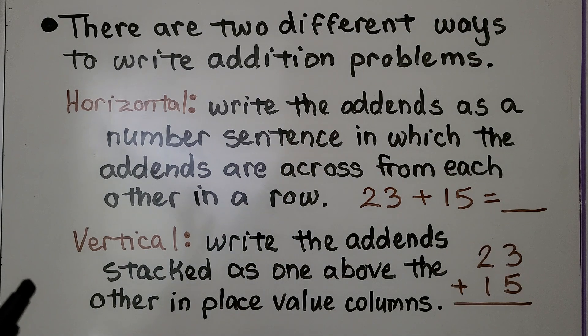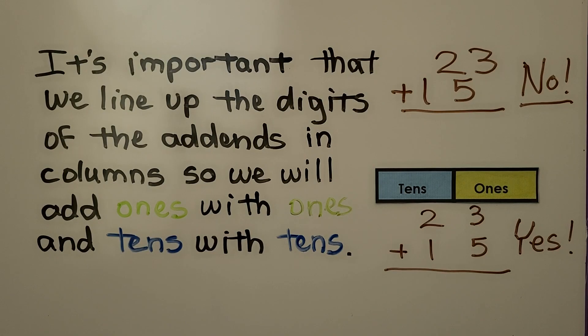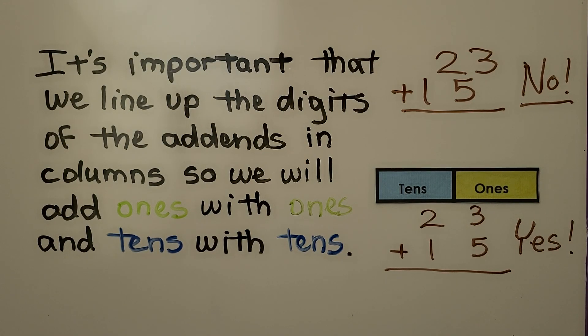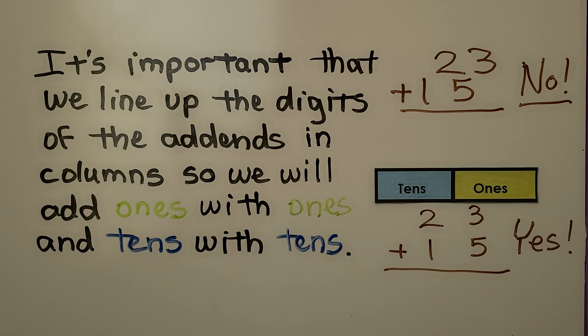We can also write them vertical using place value columns. It's important that we line up the digits of the addends in columns so we will add ones with ones and tens with tens.